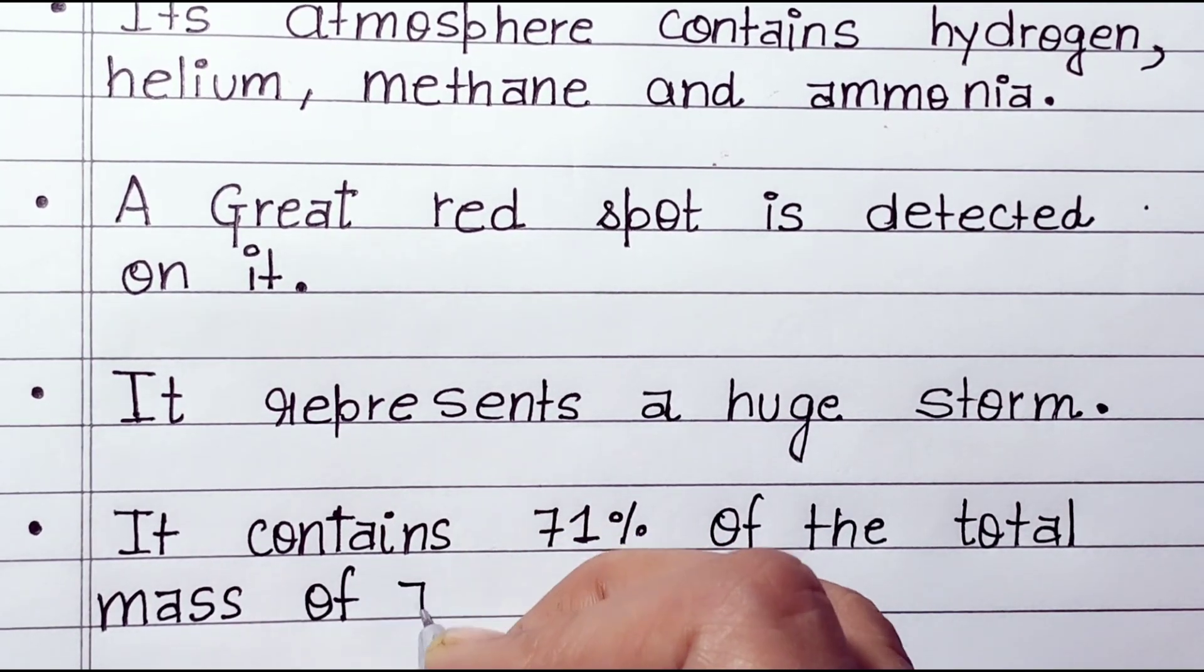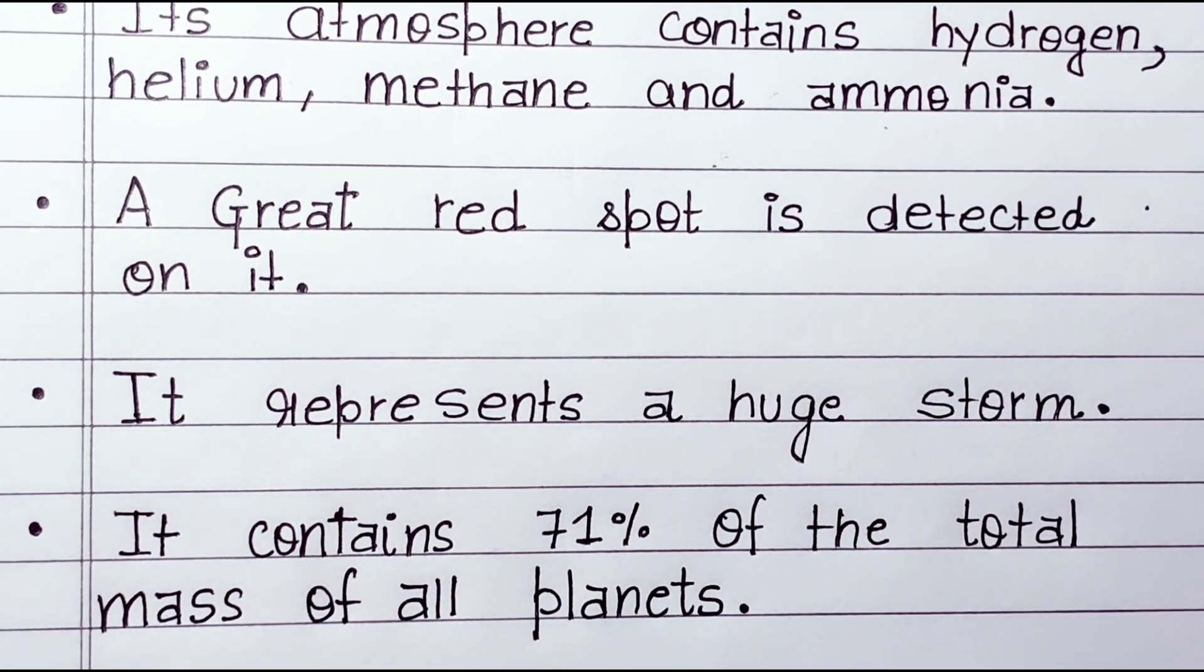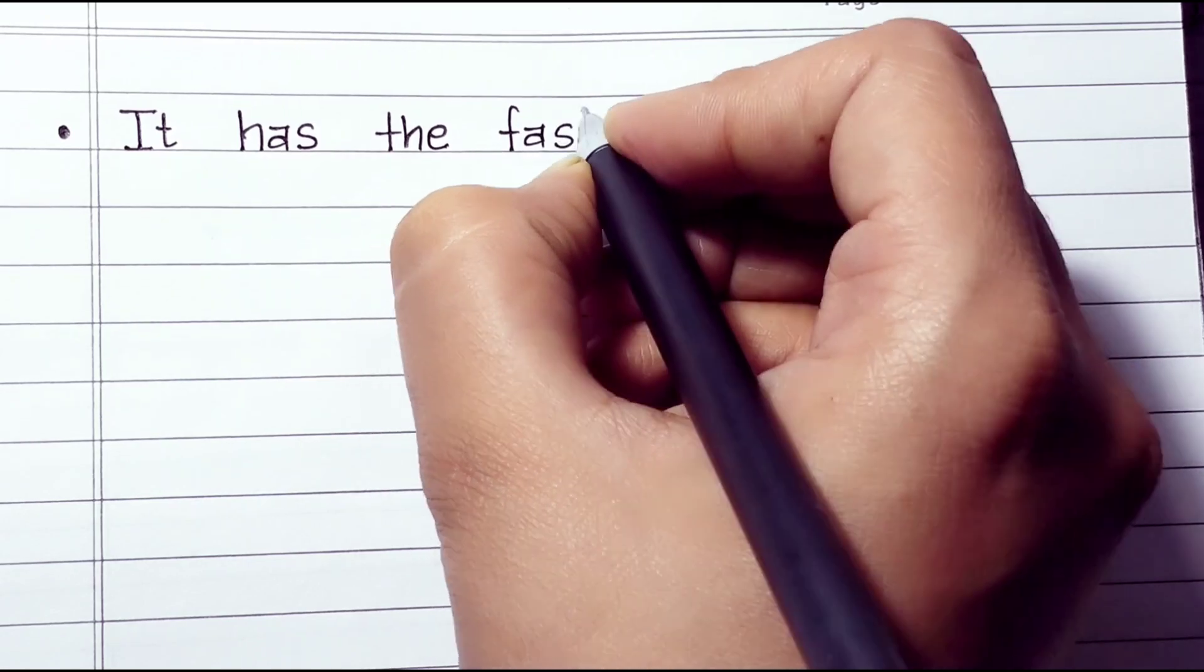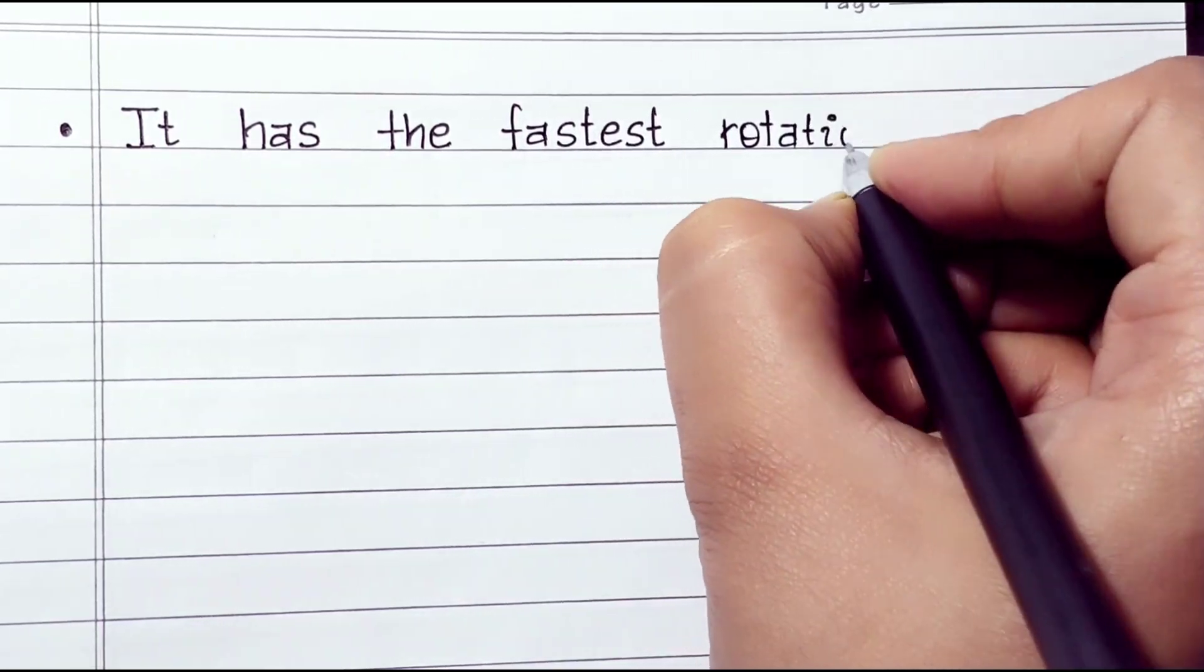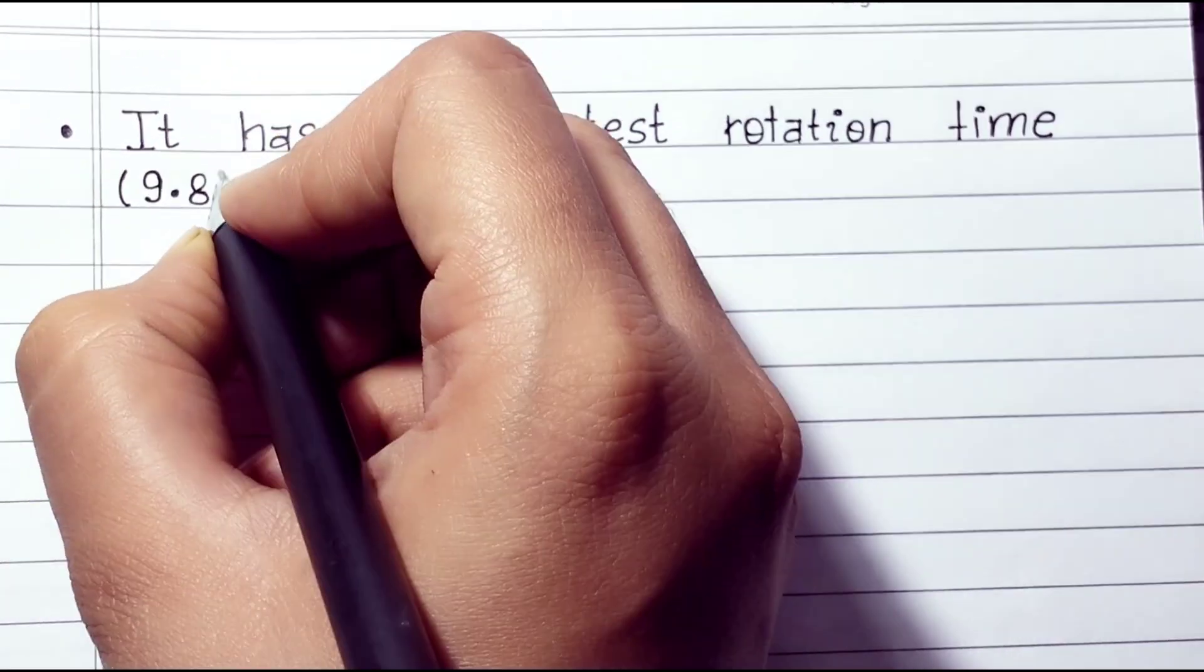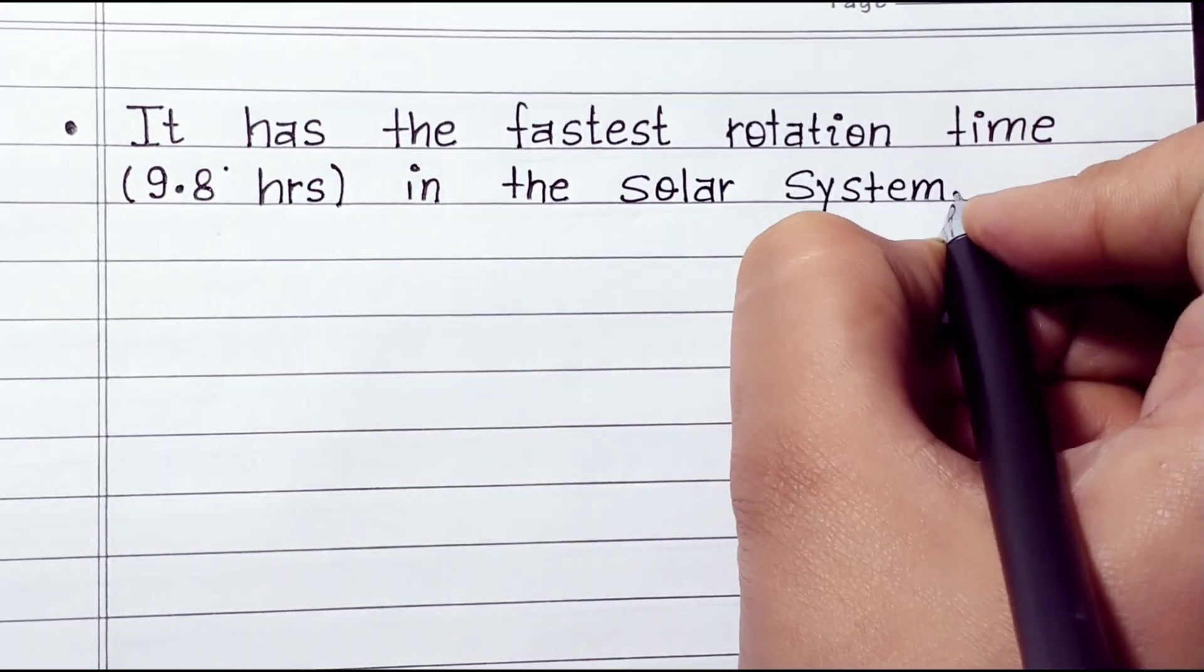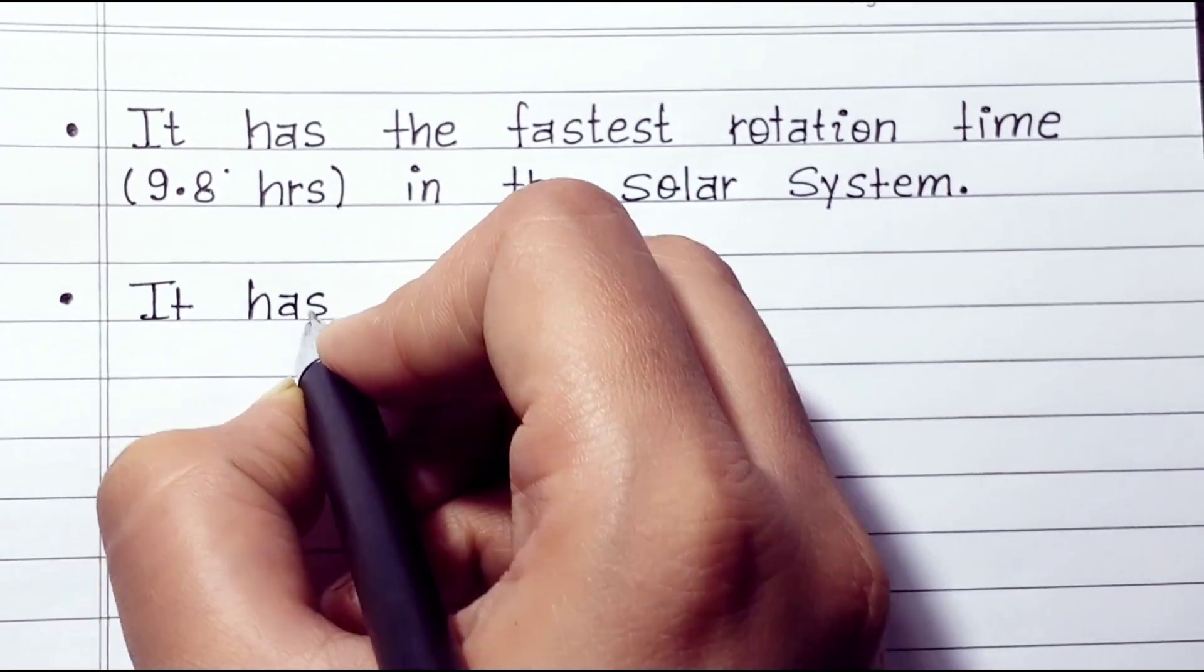It contains 71% of the total mass of all planets. It has the fastest rotation time, 9.8 hours, in the solar system.